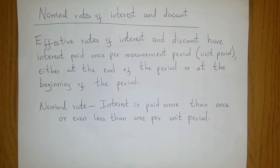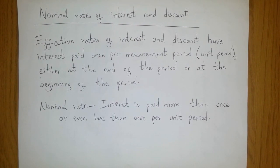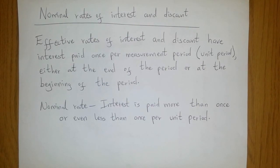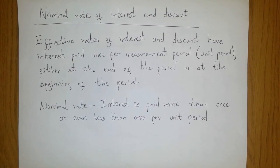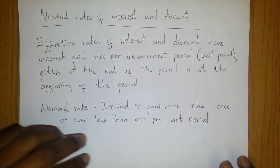If we take the unit period to be one year, effective interest would be paid either at the beginning or at the end of that year, and it would only be paid once. But in the case of nominal rates, where our unit period is one year, you could find that the nominal rate pays interest every month or maybe every six months. The interest is paid more than once per unit period.